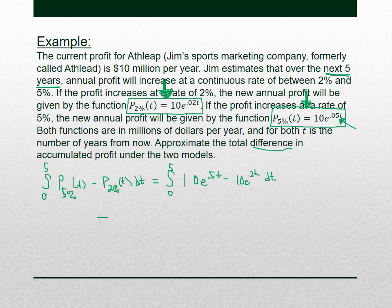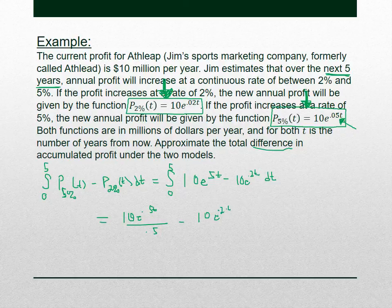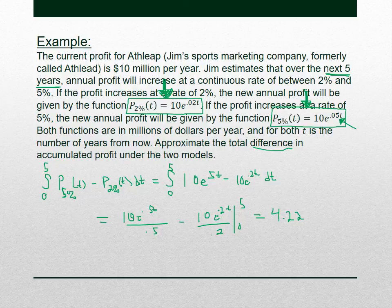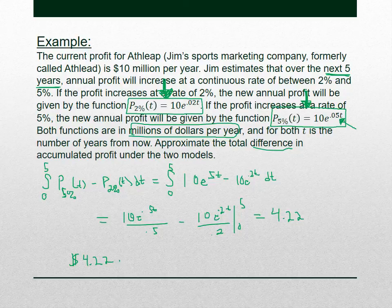Taking the antiderivative: 10e^(0.5t)/0.5 − 10e^(0.2t)/0.2, evaluated from 0 to 5. When you plug in 5 and plug in 0, what I got is 4.22. So the difference in accumulated profit is 4.22 million dollars over the next five years.